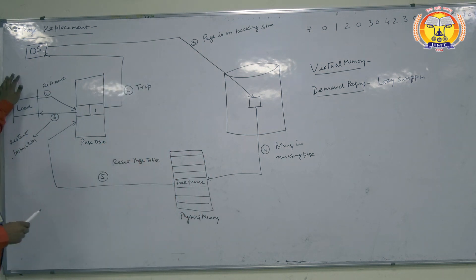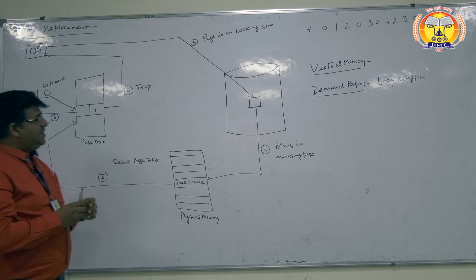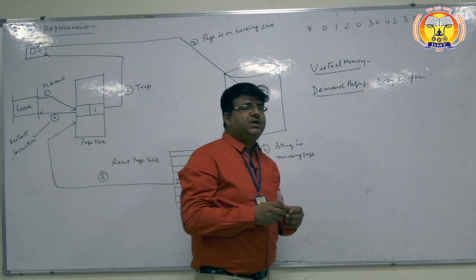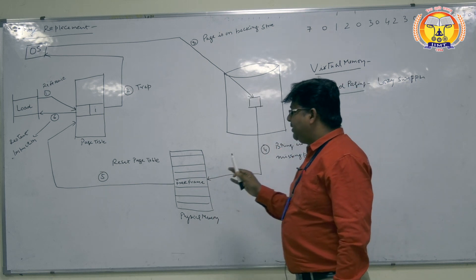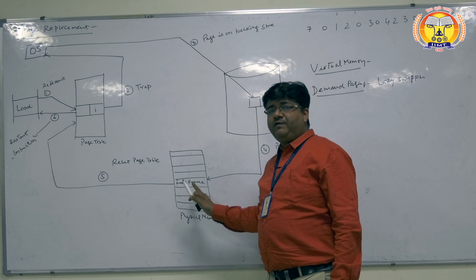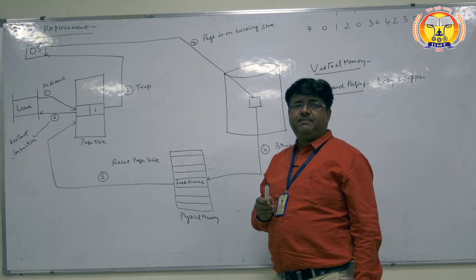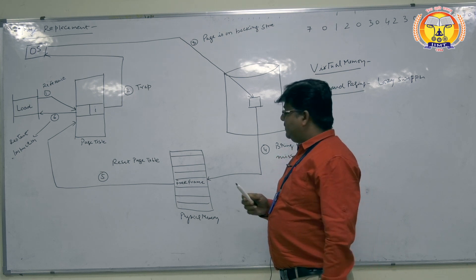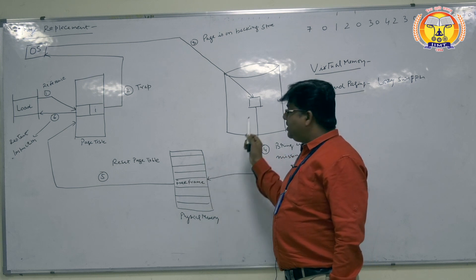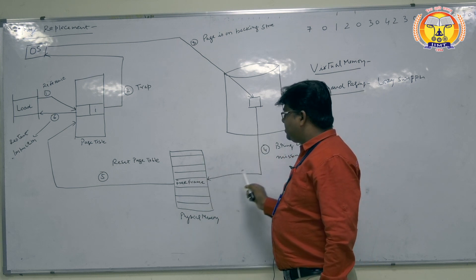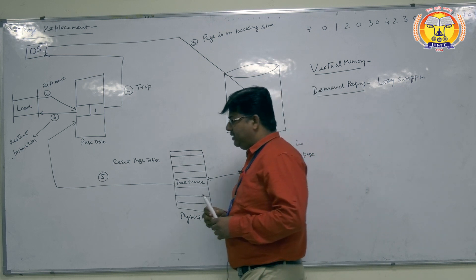Before discussing page replacement, we must know when page replacement is required. Page replacement is required when the processor requests a page from physical memory and that page is not found in physical memory. We then have to replace a page from physical memory to disk, and in that blank space, bring the required page from disk to physical memory. This concept is known as page replacement.